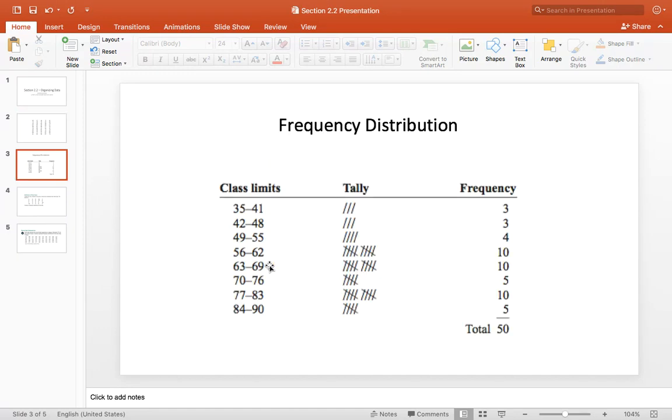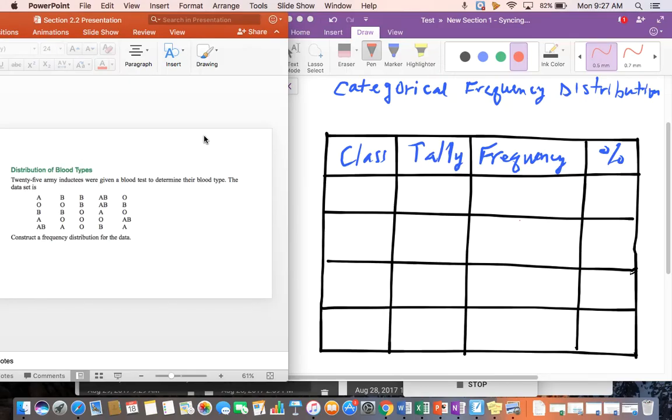So we're going to go ahead and do an example of a categorical frequency distribution. So if we were to do a study on 25 army inductees, and we decided to test their blood type. So if we were to do the study, this would be our raw data. So when we're doing a categorical frequency distribution, we need to create this table. And the four columns that we need to have are class, tally, frequency, and percentage. And I'll go through each of these.